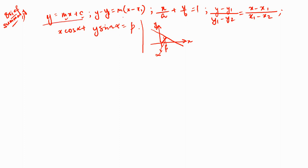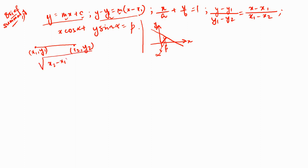Based on the parameters we know, we use a different form of the straight line equation. We also discussed the distance between two points (x1, y1) and (x2, y2) from Pythagoras' theorem: d = √[(x2 - x1)² + (y2 - y1)²].